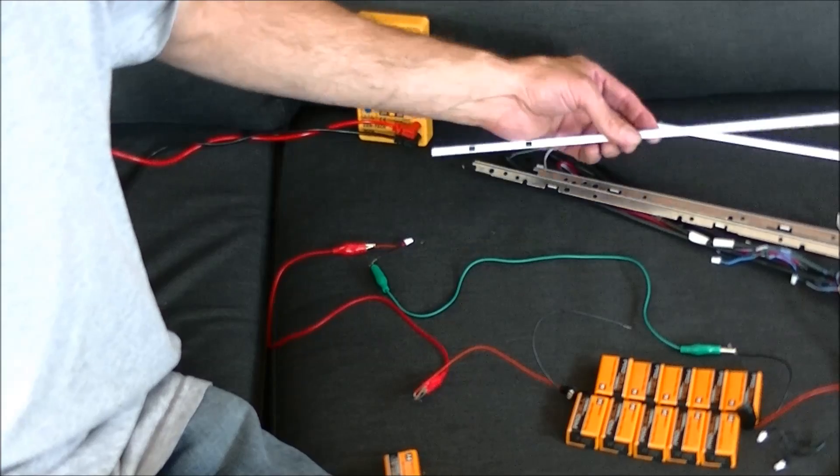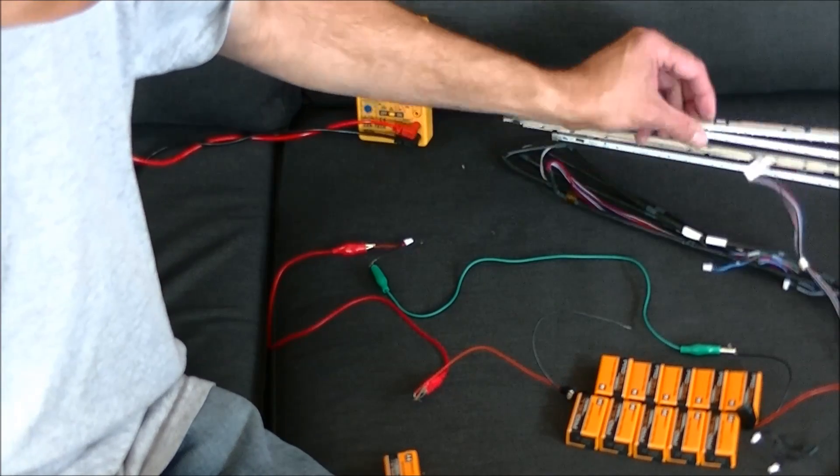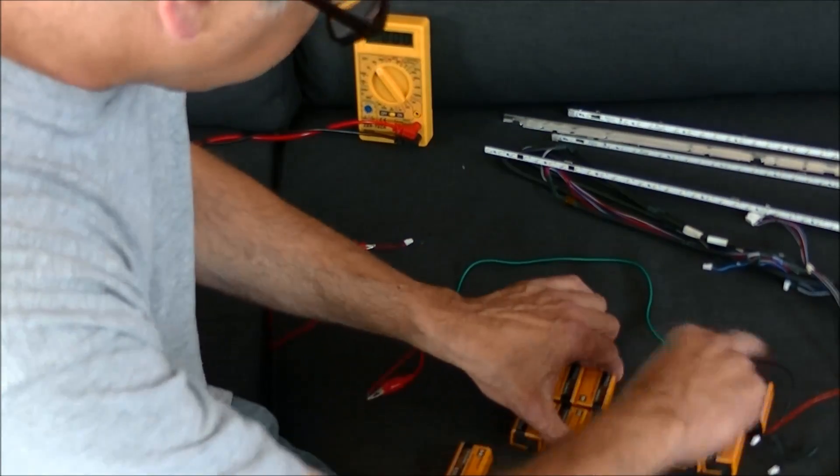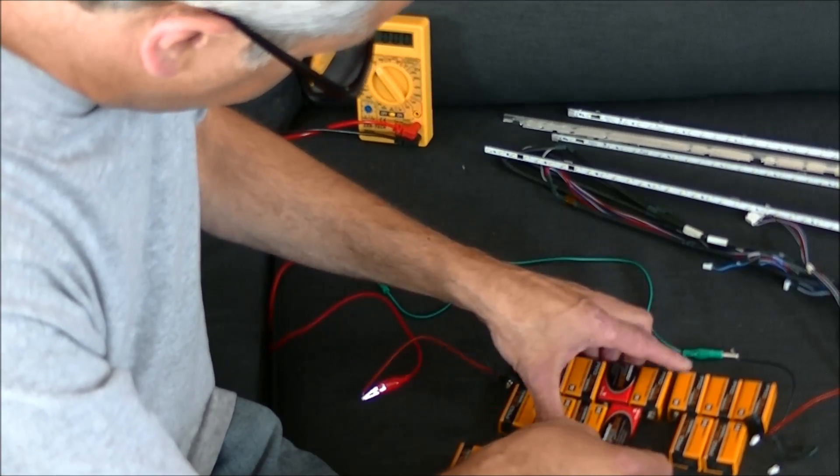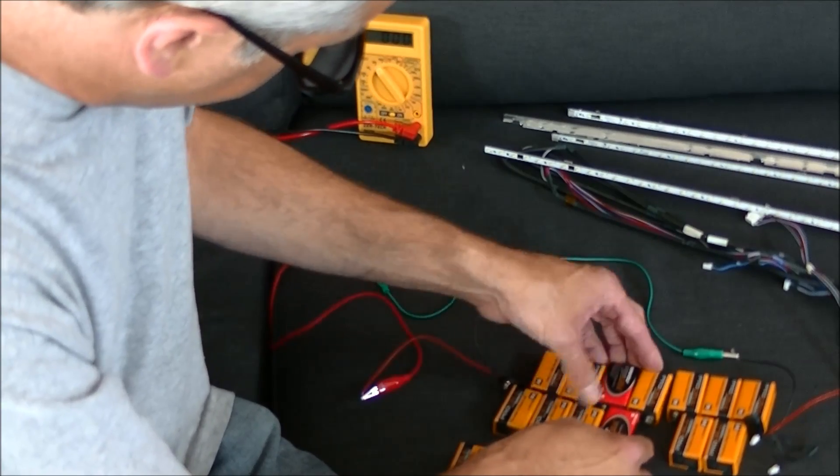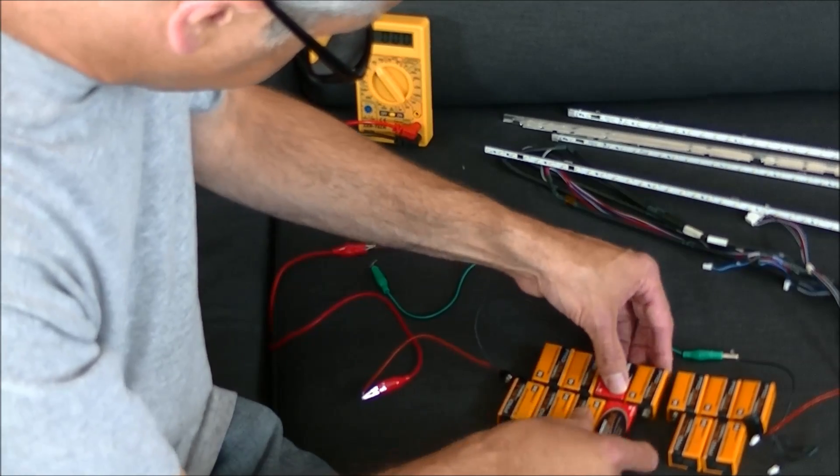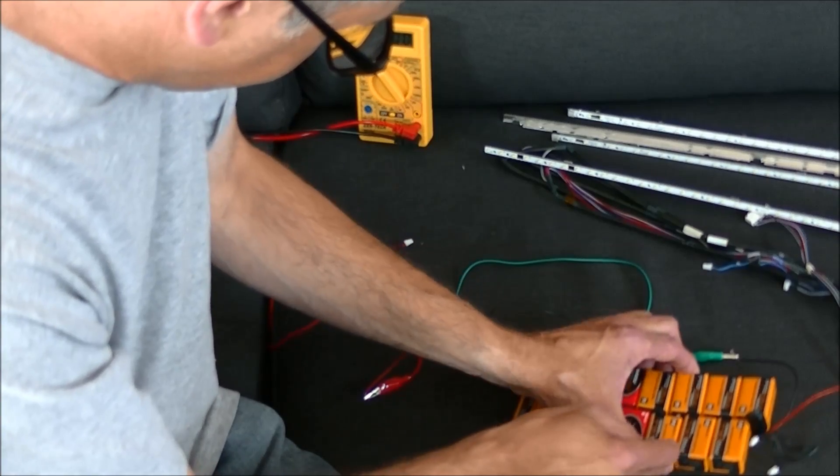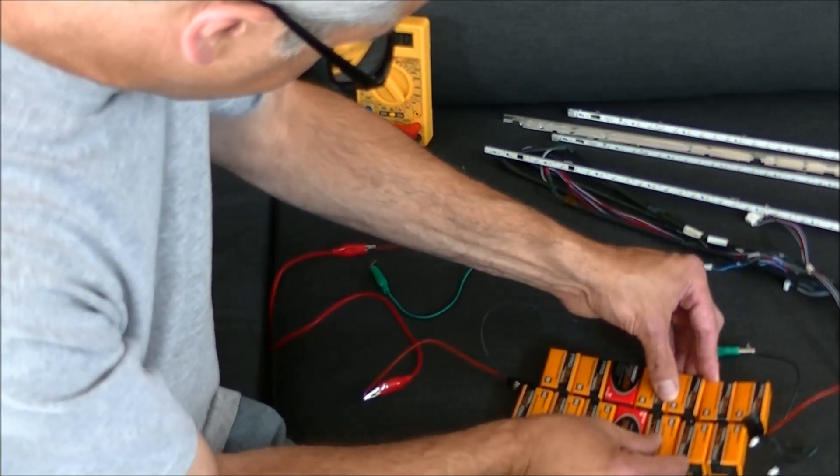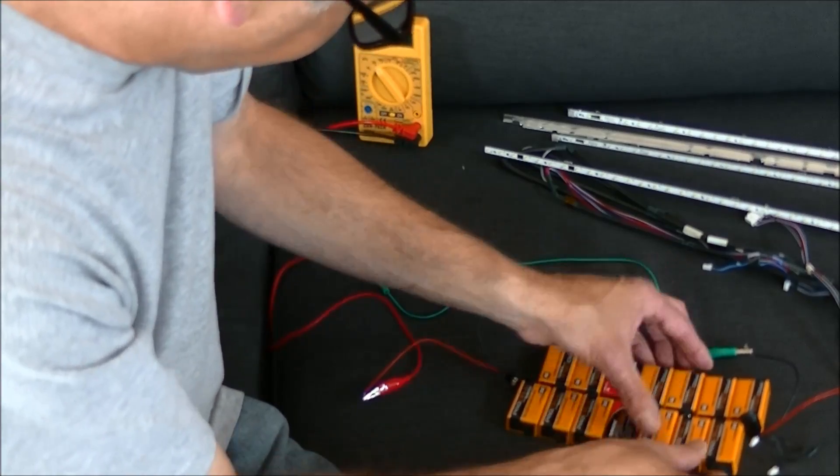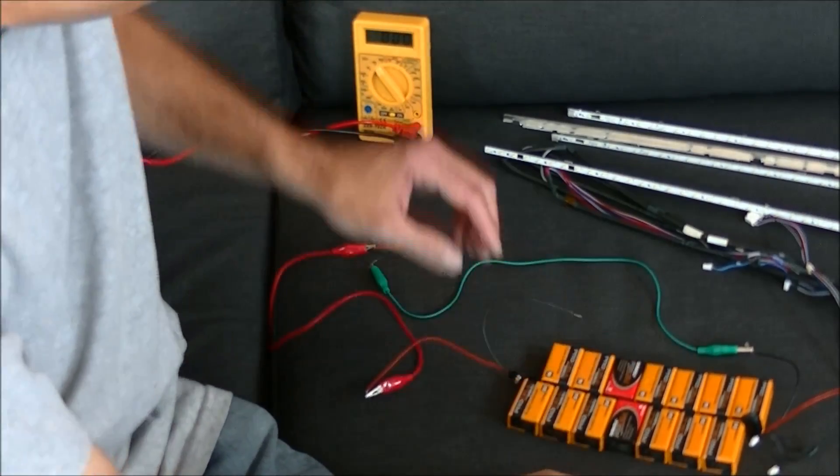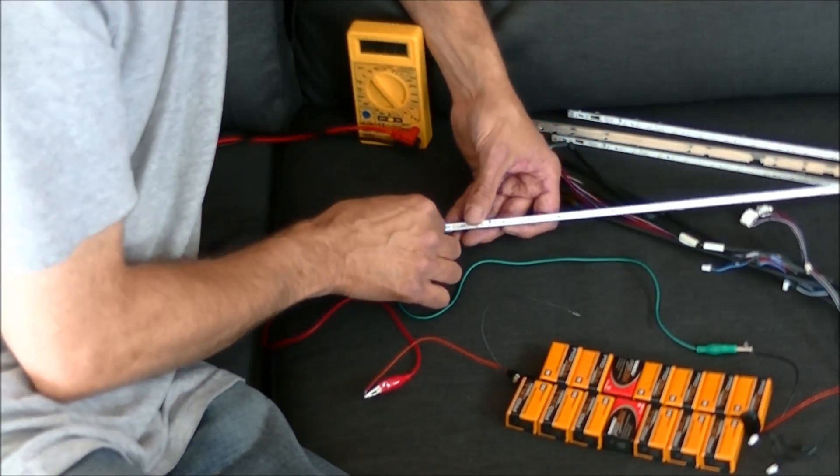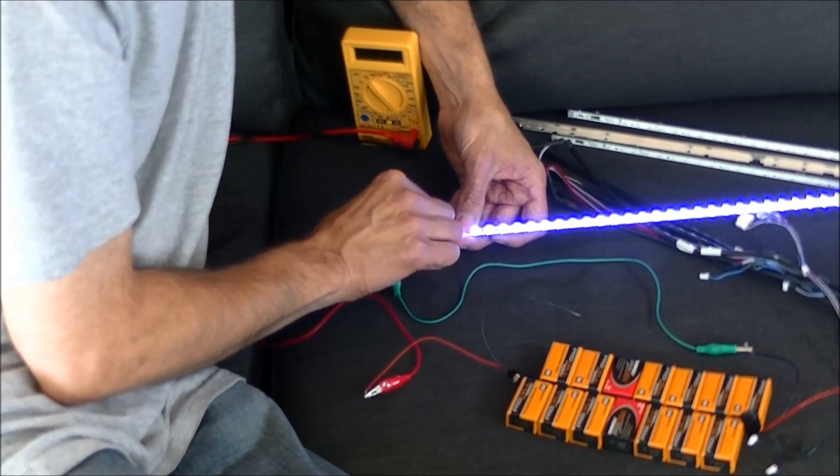And now we're going to go ahead and do the ones that have 50 on them. And in order to test those, we need to put more voltage in here. So we're going to pull this apart and add this. So now I need to have 14 of these all hooked in together. That way we get a lot more voltage because, as I said, there are about 50 LEDs on these. So go ahead and put this connector in.